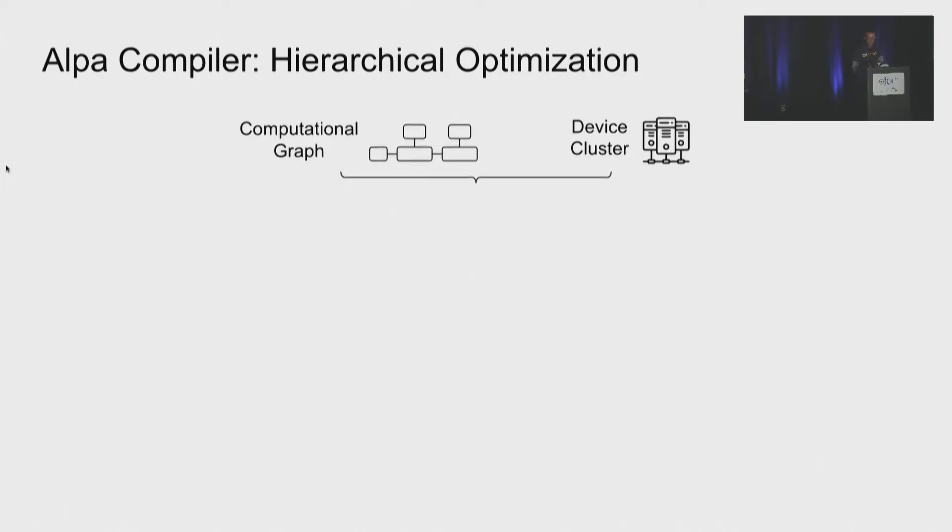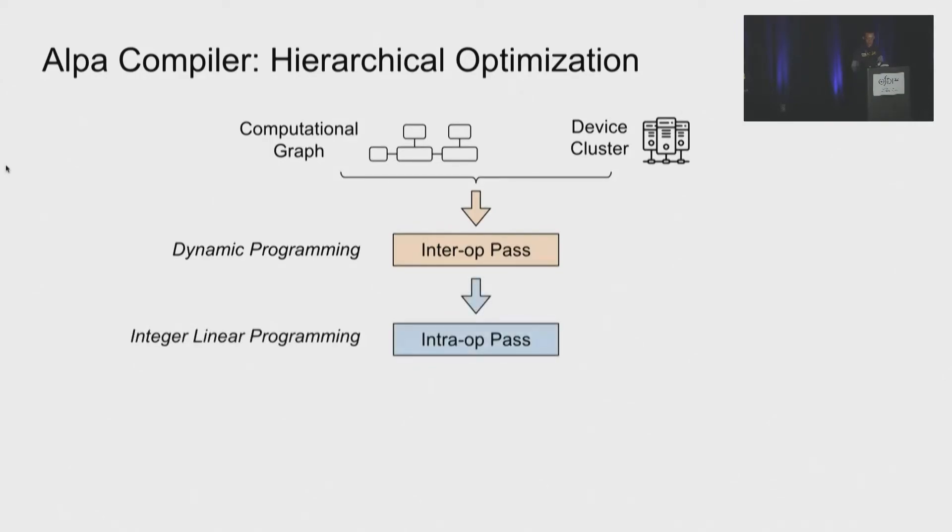So we design Alpa compiler based on this search space decomposition. The input to the compiler is a computation graph and a cluster specification. We design three compiler passes to do the optimization. First, the inter-operator pass finds the best inter-operator parallel with dynamic programming. And secondly, the intra-operator pass finds the best intra-operator parallel strategy with integer linear programming. Note that the optimization here is also hierarchical, which means that the higher-level inter-operator parallel pass will call the lower-level intra-operator parallel pass multiple times and make a decision based on feedback from the intra-operator pass. And finally, the runtime orchestration pass will realize the parallel plan and actually execute the strategy.